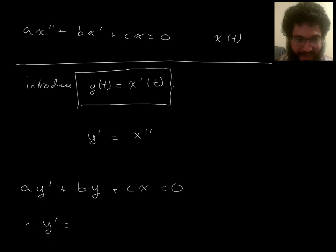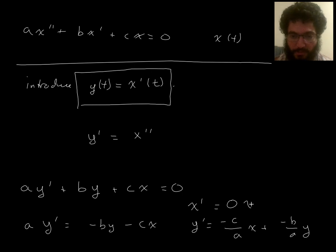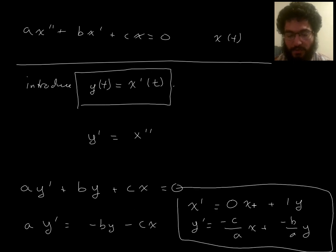Okay, let me do this in multiple steps. a y prime is negative b y minus c x. So y prime is, and then I want to write the x one first. You'll see why, because I want to write things in matrix form. So minus c over a, x, plus negative b over a, y. Okay, now put that together with what we had up here. x prime is 0x plus 1y. So there's our linear homogeneous system of differential equations with constant coefficients.